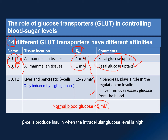On the other hand, glucose transporter number 2, which is found in your liver cell and the pancreatic beta cell, has a very high Km value of 15 to 20 millimolar — meaning it is only switched on by a high glucose level. This is because in the beta cell, when it encounters glucose, it will start producing insulin, and we only want insulin produced when blood sugar is really high, for example after a meal.